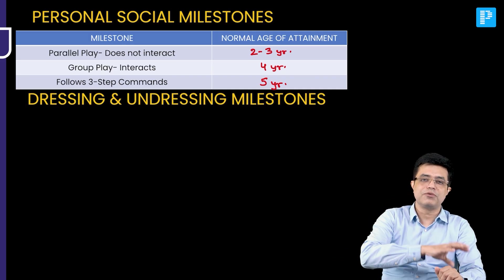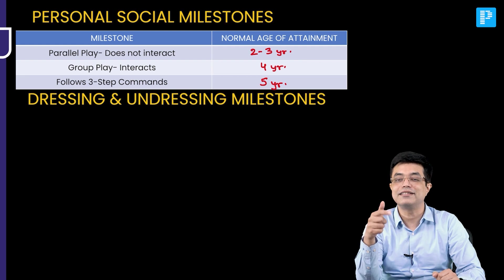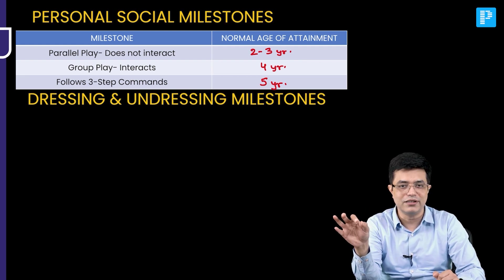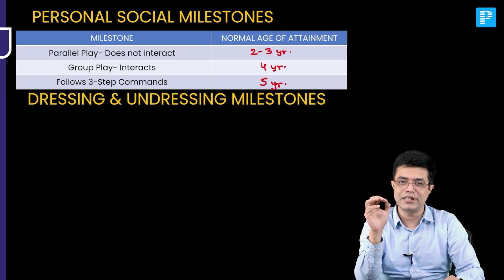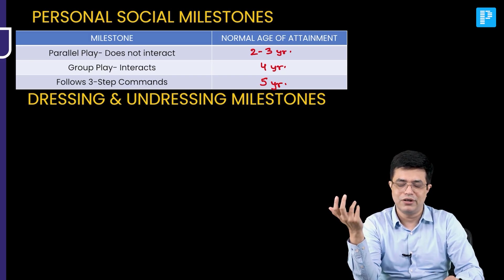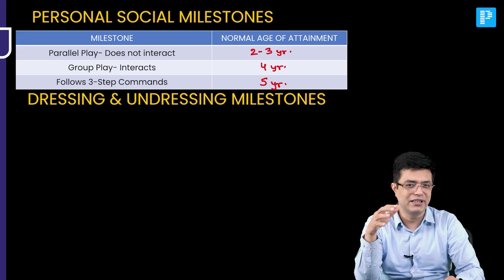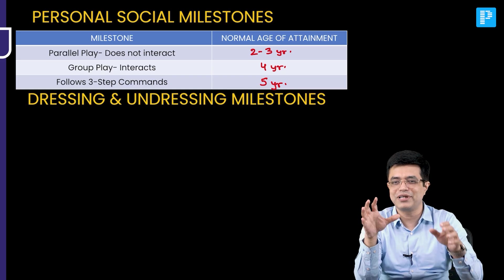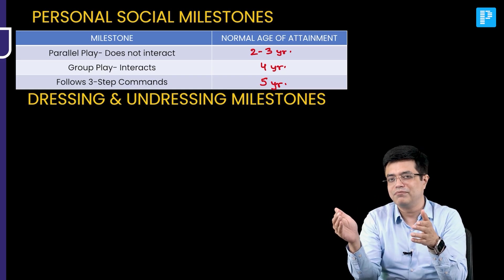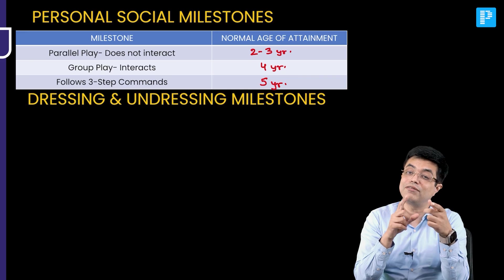Then we have the dressing and undressing milestones, which are frequently asked in the exam. Remember: with support comes first, without support comes later. Undressing comes first, dressing comes later — because undressing is easy while dressing is complex. You can remember it like this: if you have to go to a party, getting ready takes longer than changing back into your clothes and sleeping. Getting ready is complex, so dressing comes late; coming back and changing is easier, so undressing comes first.